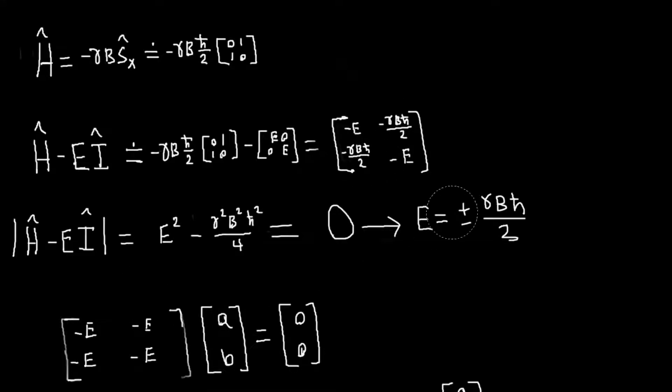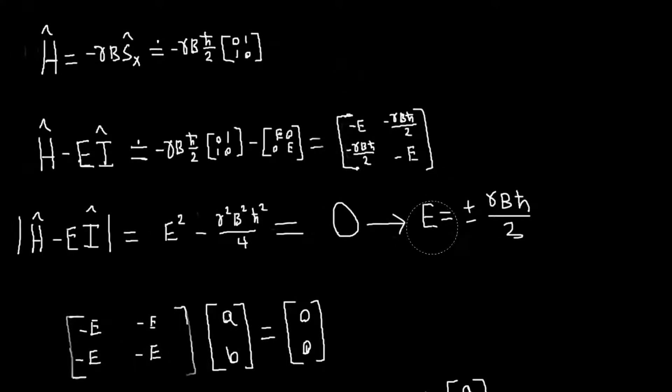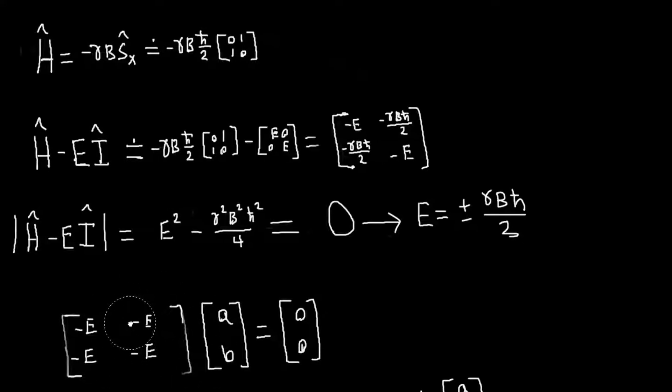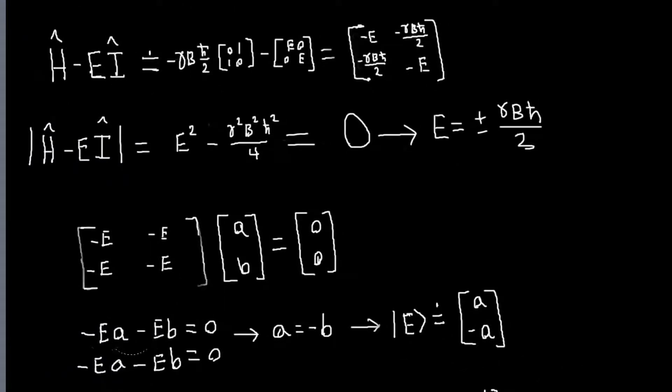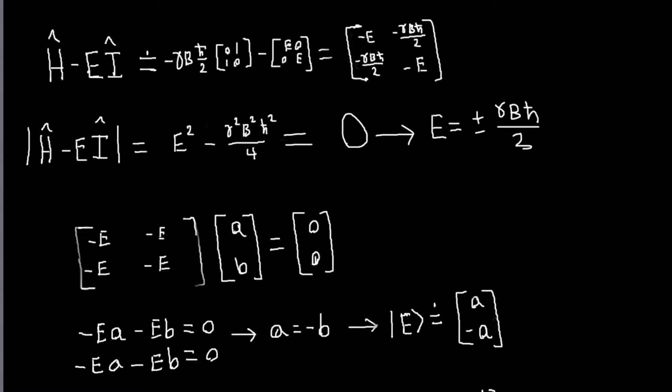So instead of writing gamma b h bar over two everywhere, I'm just going to write E. So our matrix will become minus E, for the case of E equals plus gamma b h bar over two, we get just minus E's everywhere in this matrix. And if we write out the two equations this gives us, this tells us that minus ea minus eb equals zero. And we get the same equation twice. So we get that a equals minus b, so we know that the representation of our eigenstate will look like this, a and minus a.